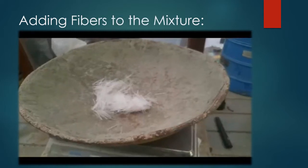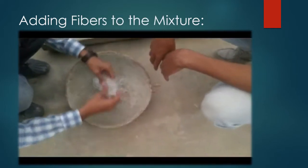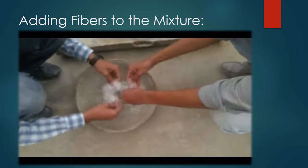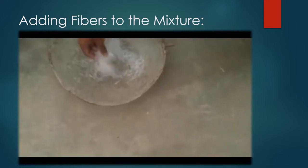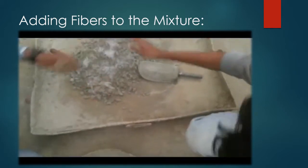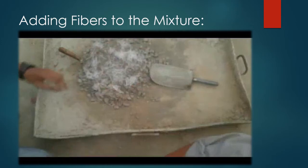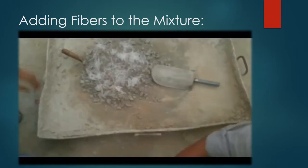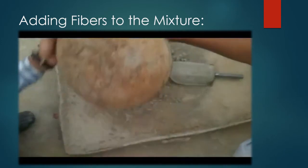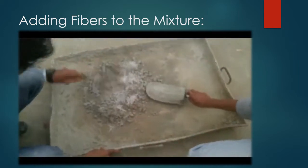Now we are weighing the fibers. The fiber we use is polypropylene fiber. You can also use any kind of fiber, but it then changes the concrete mix design depending upon the fibers used. The polypropylene fiber ratio is 1 to 2% of the total volume of the concrete.